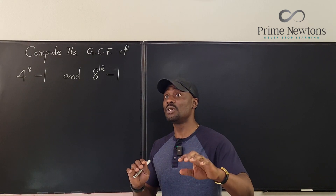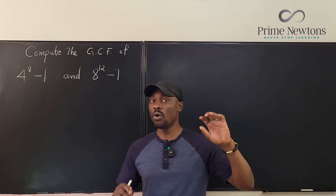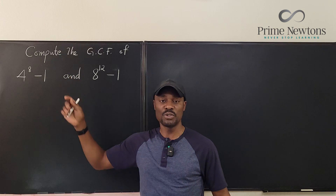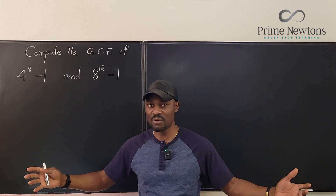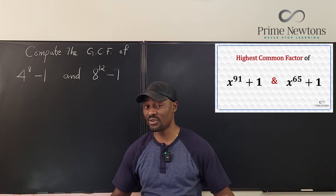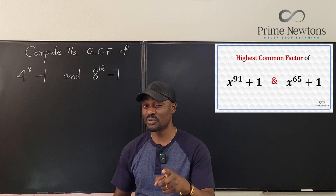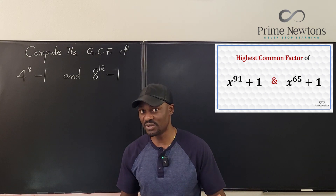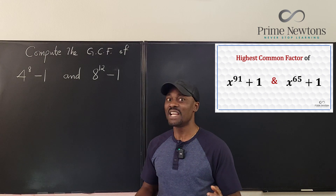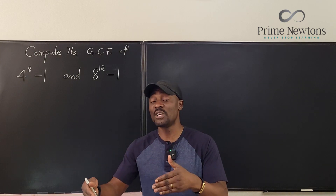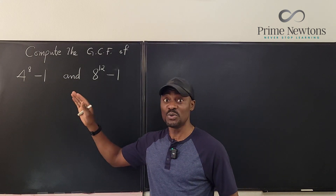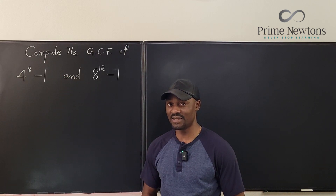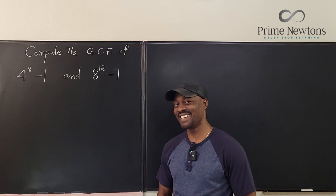If you recall a similar problem I did where we were not given the values of the base — just given them in terms of x — we were asked to find the greatest common factor of x to the 91 plus 1 and x to the 65 plus 1, and we figured out that it was x to the 13th plus 1. The same exact steps I used in that video I'm going to use here, because now we have the numbers so we can easily tell what the answer is. Let's get into the video.